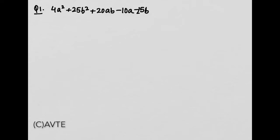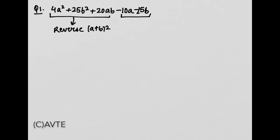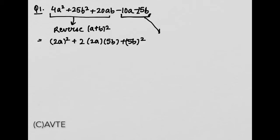Is question ko hum do parts mein solve karenge. Pahle part ko hum dhyan se dekhein — yeh hai reverse of a plus b ka whole square. 2a ka whole square plus 2 into 2a into 5b plus 5b ka whole square. Aur is term mein se hum minus 5 common lenge. Hamare paas bacha 2a plus 5b.